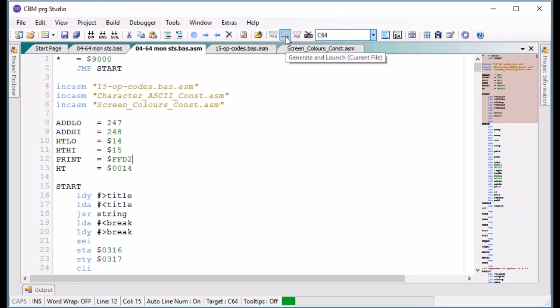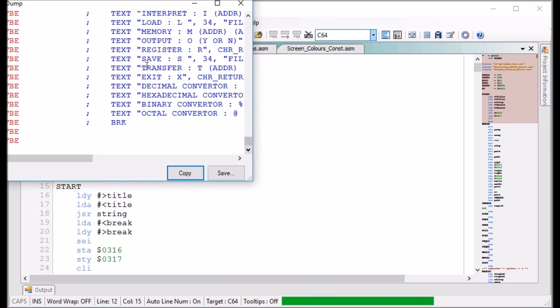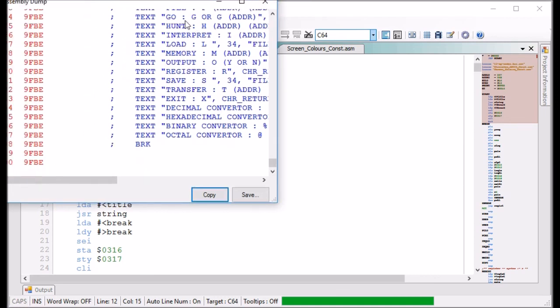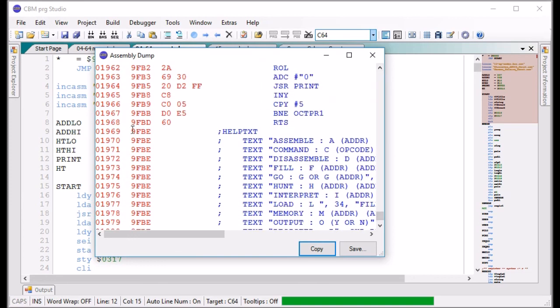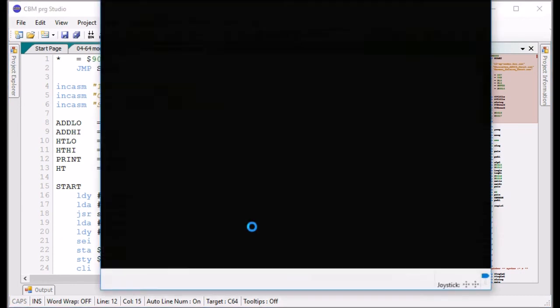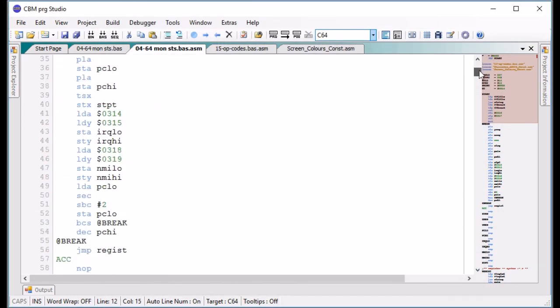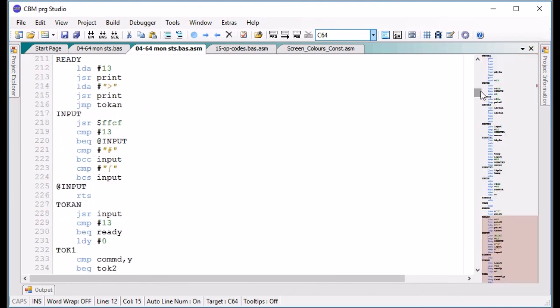And it just finishes compiling just before BASIC. So if I scroll all the way down and then just go up a bit, there we are, 9FBE. So it's only just shy, so it's a big old piece of software that I wrote when I was in my teens doing my A levels. And this will get put up on GitHub.